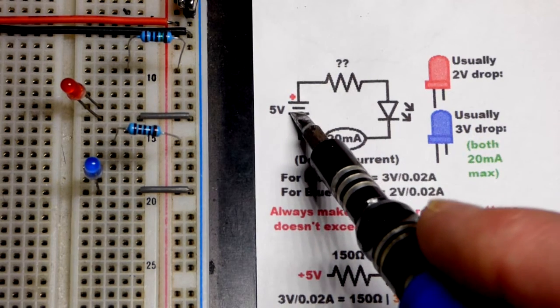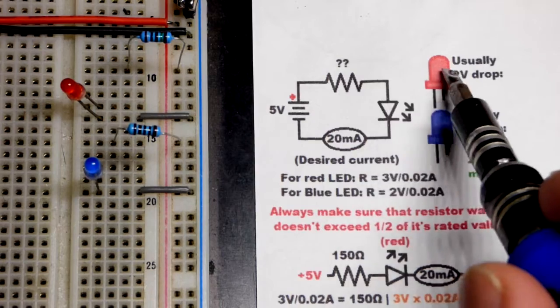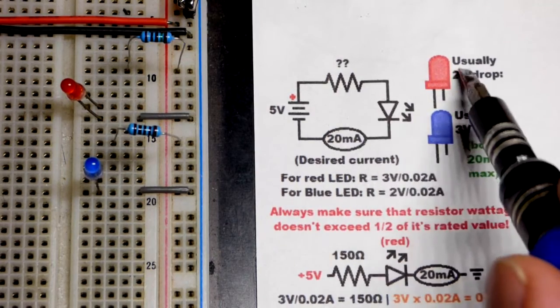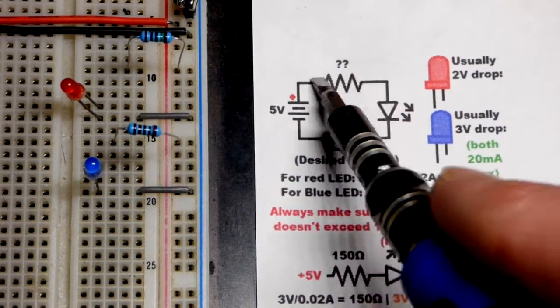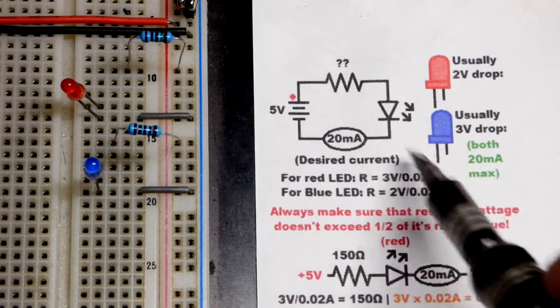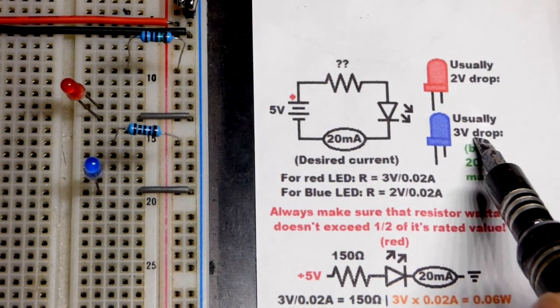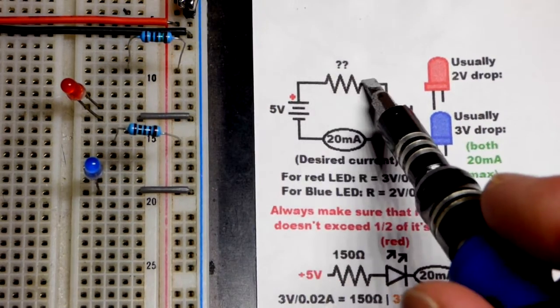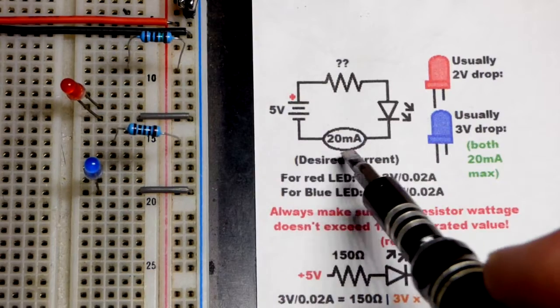So we have 5 volts from the power supply. When it comes to the resistor setting current, the LED is in series with it, so it drops some of the voltage. Red LEDs tend to drop 2 volts. So you can expect 3 volts across the resistor because 5 subtract 2 is 3. Whereas the blue LEDs tend to drop about 3 volts. So 5 subtract 3 will give us about 2 volts across the resistor. And that will set the current through the whole circuit.